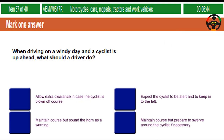When driving on a windy day and a cyclist is up ahead, what should a driver do? Allow extra clearance in case the cyclist is blown off course. Expect the cyclist to be alert and to keep in to the left. Maintain course but sound the horn as a warning. Maintain course but prepare to swerve around the cyclist if necessary.